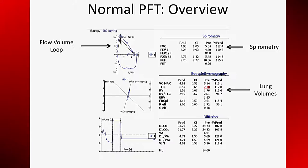Next are lung volumes. These numbers are derived from pressure measurements taken from a mouthpiece and body box. The procedure is called body plethysmography. An alternative method used by less expensive equipment derives lung volumes from helium dilution. Last are the diffusion measurements. These numbers are derived from measurements of carbon monoxide.